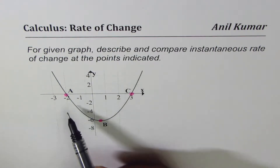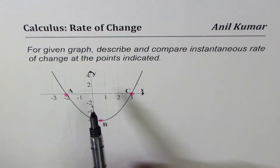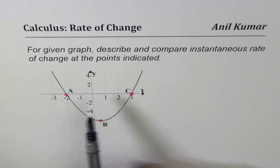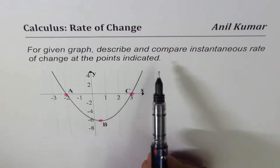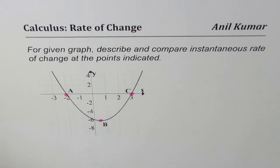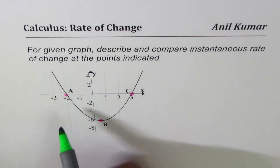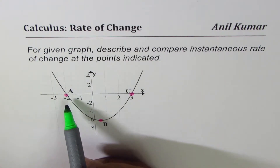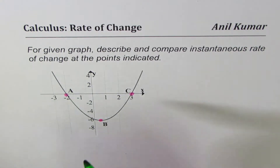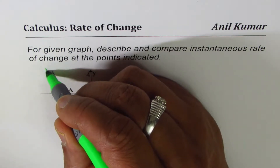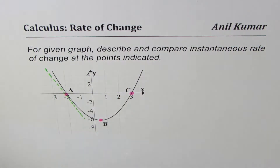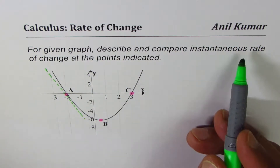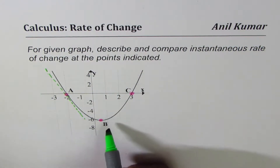Three points are A, B, and C. We need to approximately find the instantaneous rate of change at these points and then compare them. At point A, to find the instantaneous rate of change, we need to draw a tangent at this point. The slope of the tangent gives us the instantaneous rate of change.